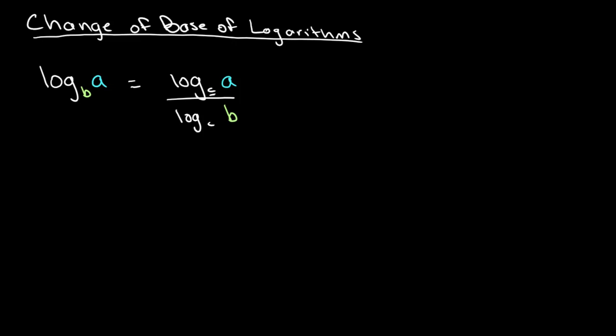Let's take as an example log base 5 of 7. If we want to change our base to any number for any given reason, we can simply apply this law and obtain whatever base we want. So if we want this to be in base 7, we can write this as log base 7 of 7 divided by log base 7 of 5.